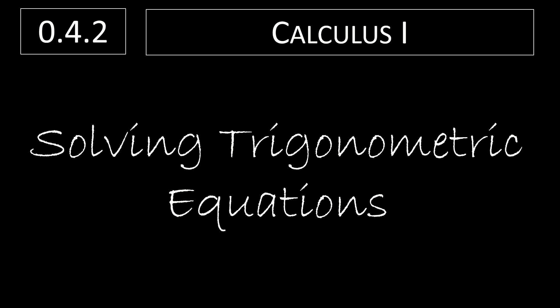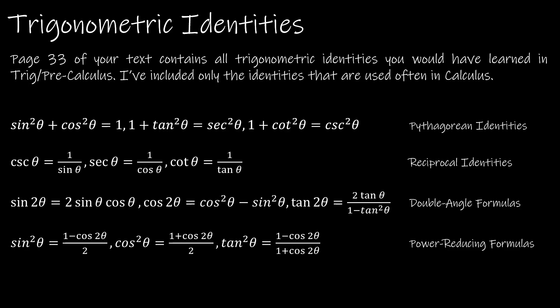Let's look at solving trigonometric equations, starting with some trigonometric identities. Page 33 at the bottom has all of the trigonometric identities you would have learned in pre-calc or trig. I've highlighted the ones we use most often in calculus. One we use quite often is the Pythagorean identities — most often this first one, though we'll also use the second one. They're all the same idea: a² + b² = c². We're not going to go into where all of these came from, just that they exist.